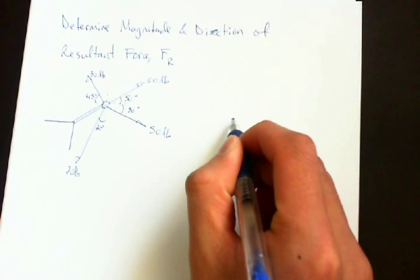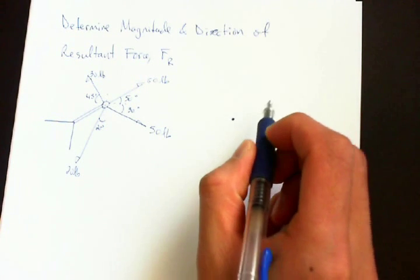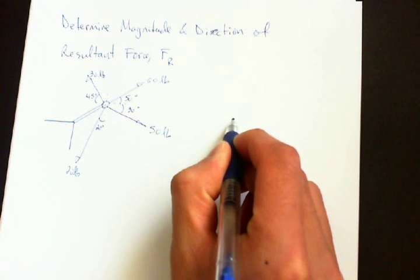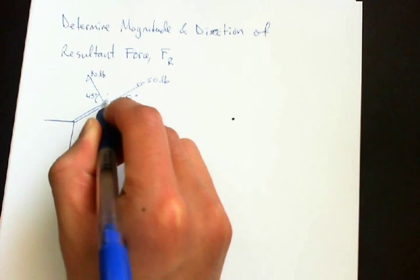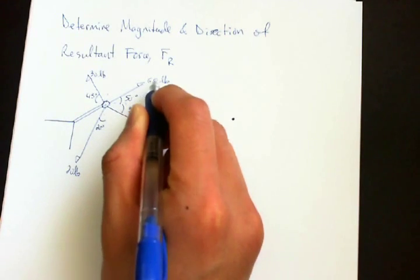So to start this problem, we draw a free body diagram. So we start with this dot, and this dot will represent this point here, which is where all the forces are acting at.